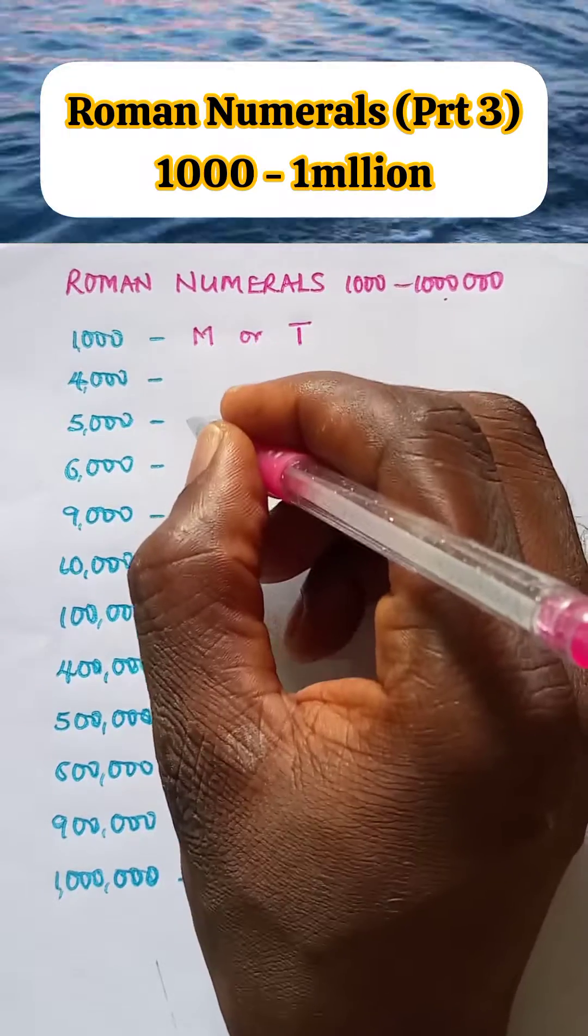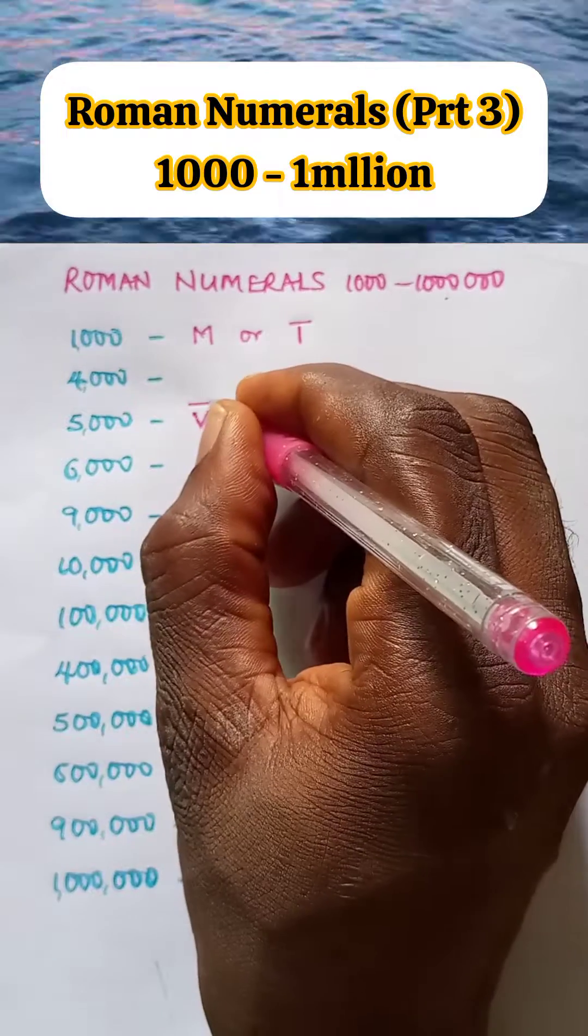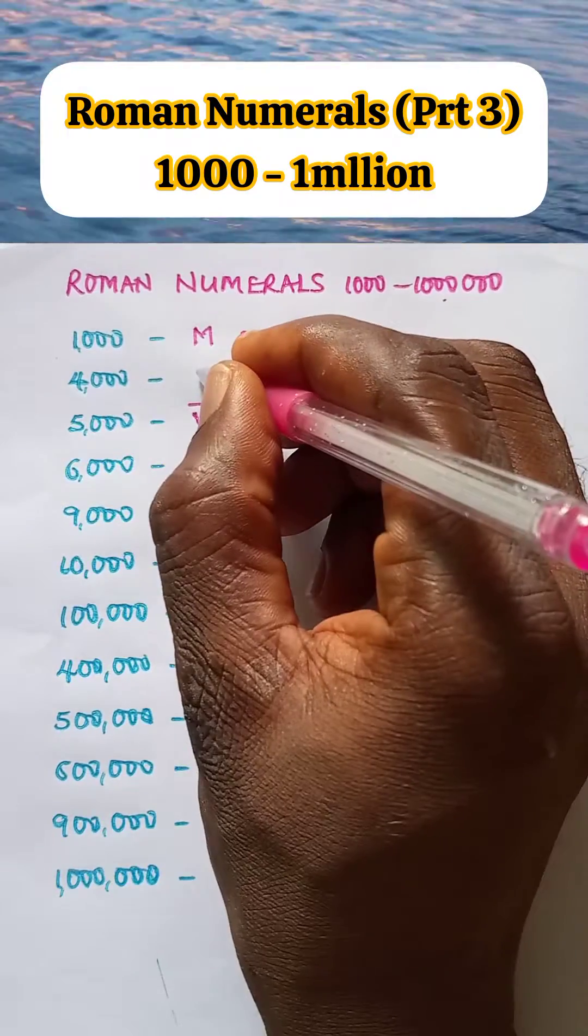Five thousand is V bar, which is five thousand. So four thousand will be five thousand minus one thousand.